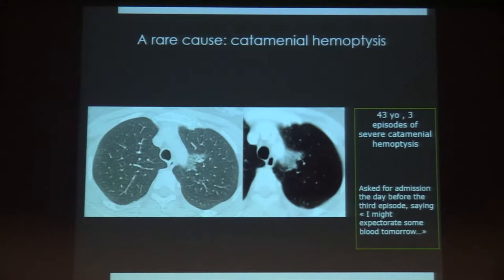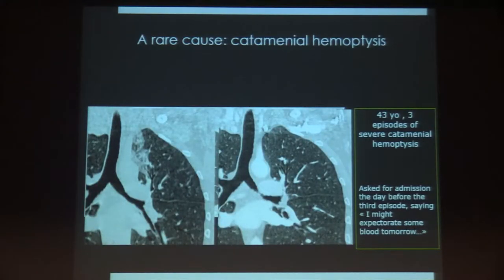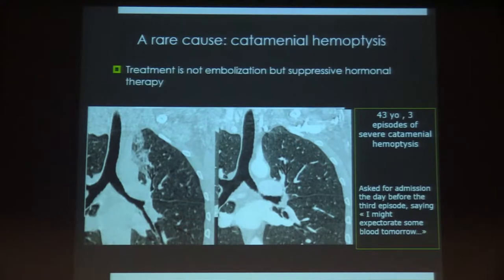Lastly, a very rare cause is catamenial haemoptysis — I have had only one case in my whole career. Endometrial tissue can be present in bronchi, which is surprising. I remember a woman who came to the hospital saying she expected a severe haemoptysis the next day based on the pattern from prior months. Indeed the next day she had massive haemoptysis with ground glass in the left upper lobe. In this case the treatment is not bronchial embolization but suppressive hormonal therapy, and the haemoptysis never recurred.